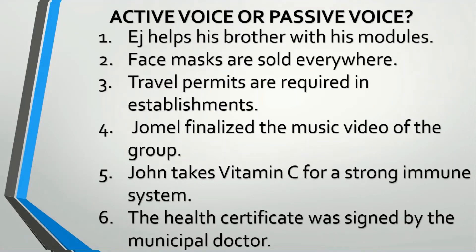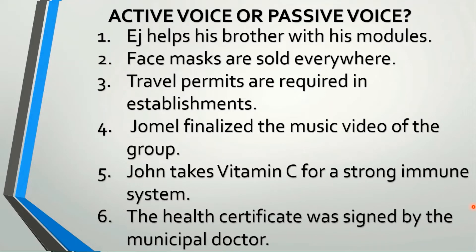Let's see if you can already recognize sentences using a verb in the active voice or in the passive voice. Always remember: when the doer of the action is used as a subject, the verb is in the active voice. But when the doer is used as the object of the preposition or when the doer is unknown, the verb is in the passive voice. Number one: EJ helps his brother with his modules. The doer is EJ, used as the subject at the beginning — that's active voice. Number two: face masks are sold everywhere. Who sells face masks? Unknown. So, the answer is passive voice.